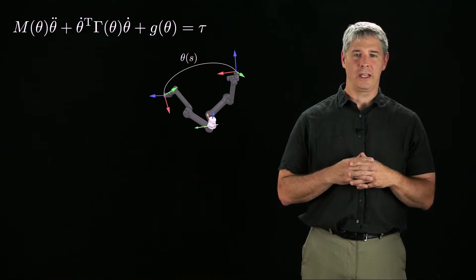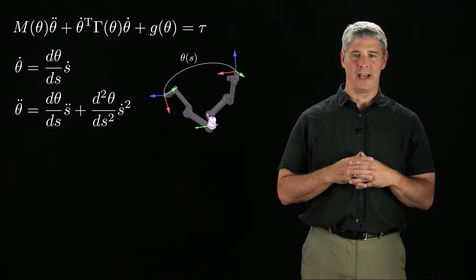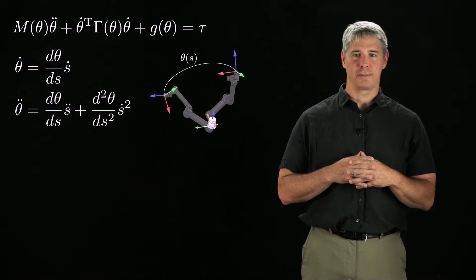Keeping in mind that we're only interested in the dynamics of the robot when it is on the path theta of s, we can rewrite theta dot and theta double dot as functions of the derivatives of the path with respect to s and the derivatives of s with respect to time.